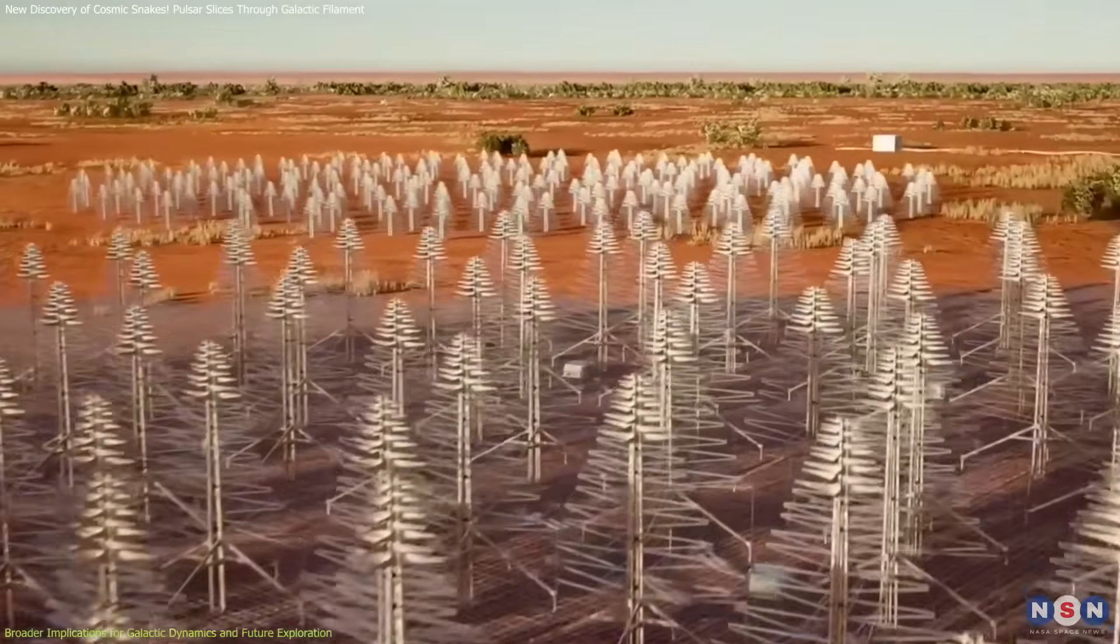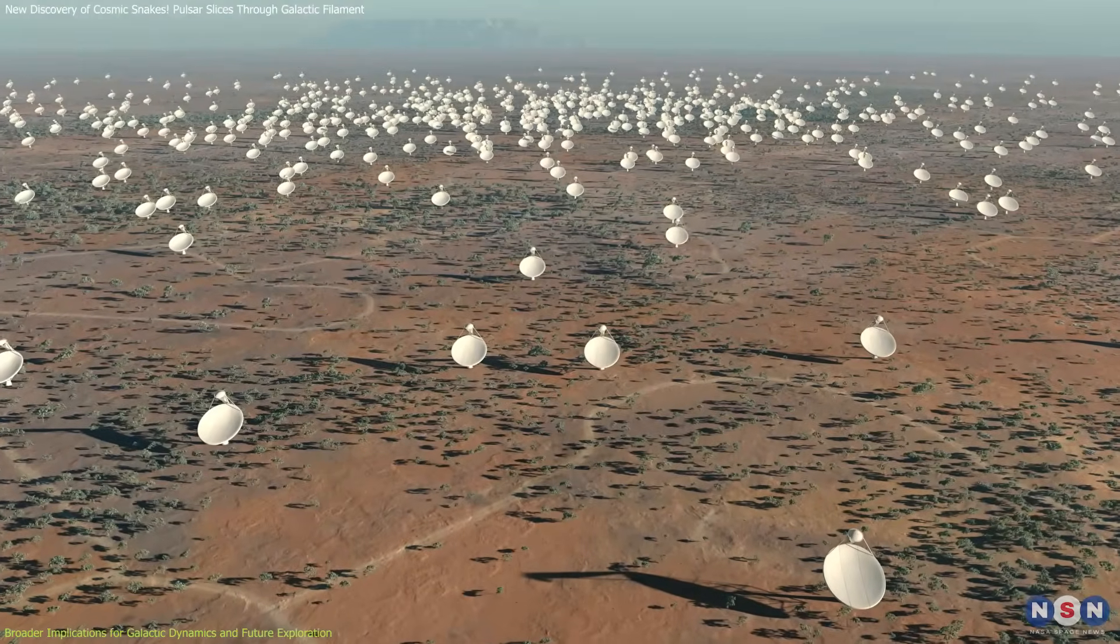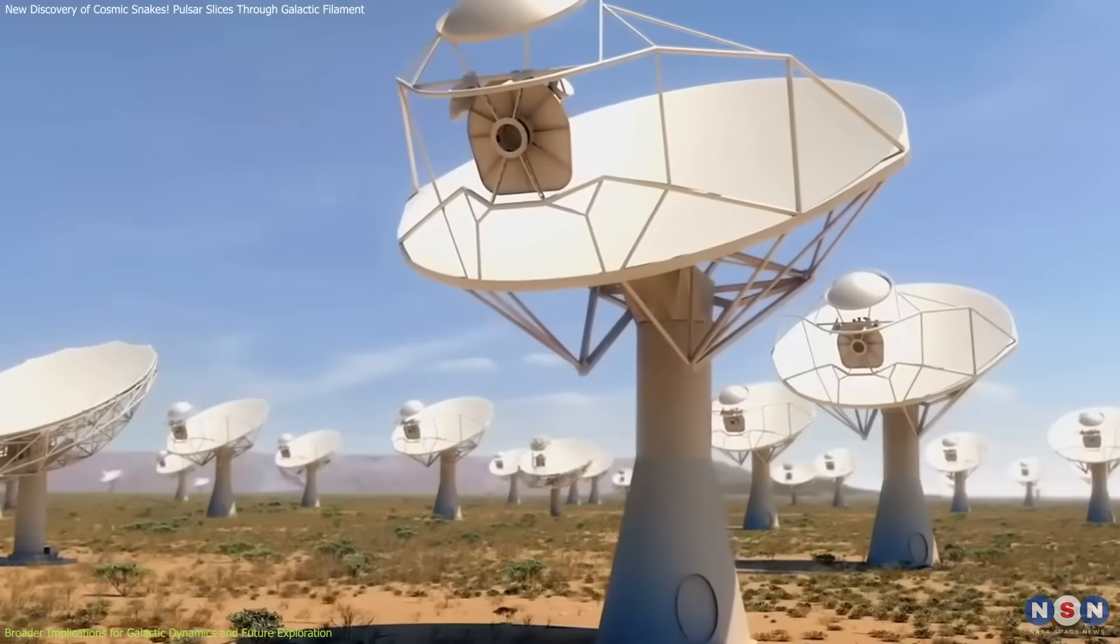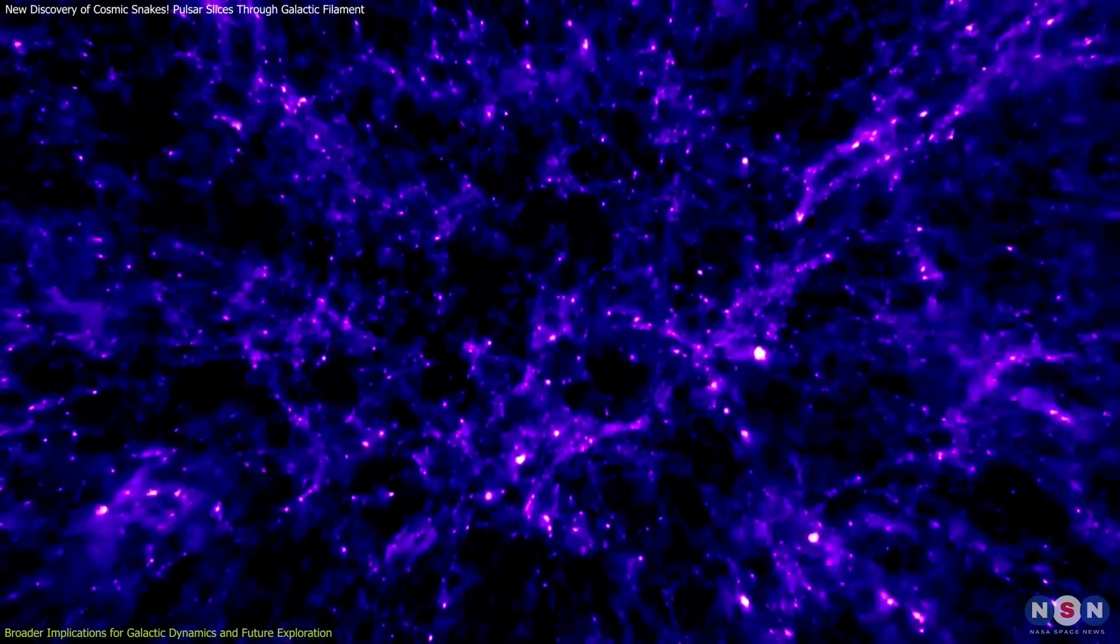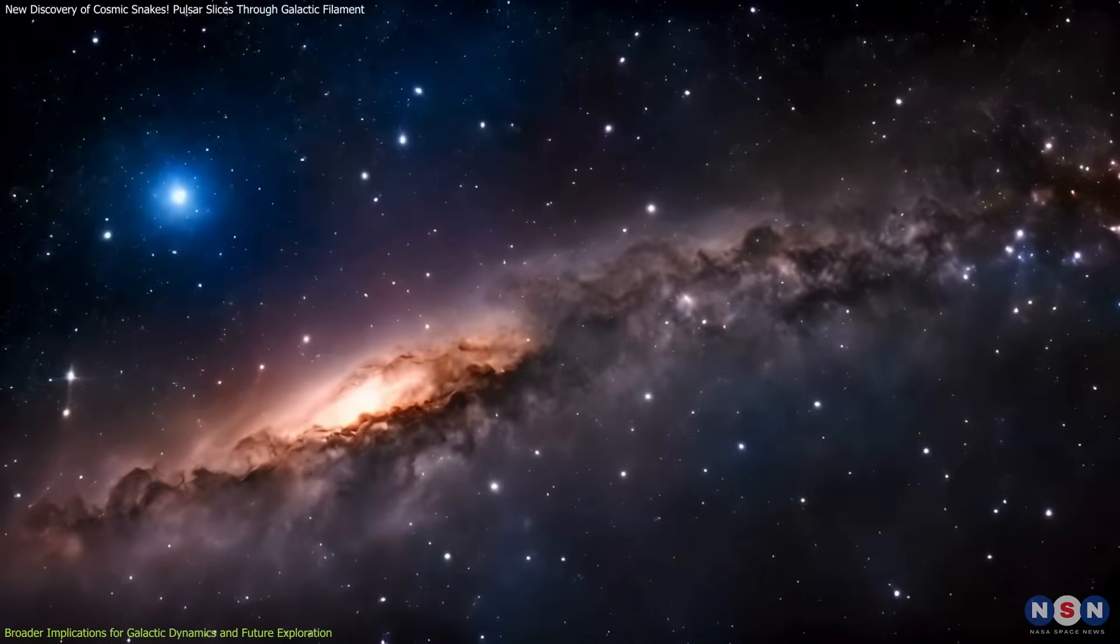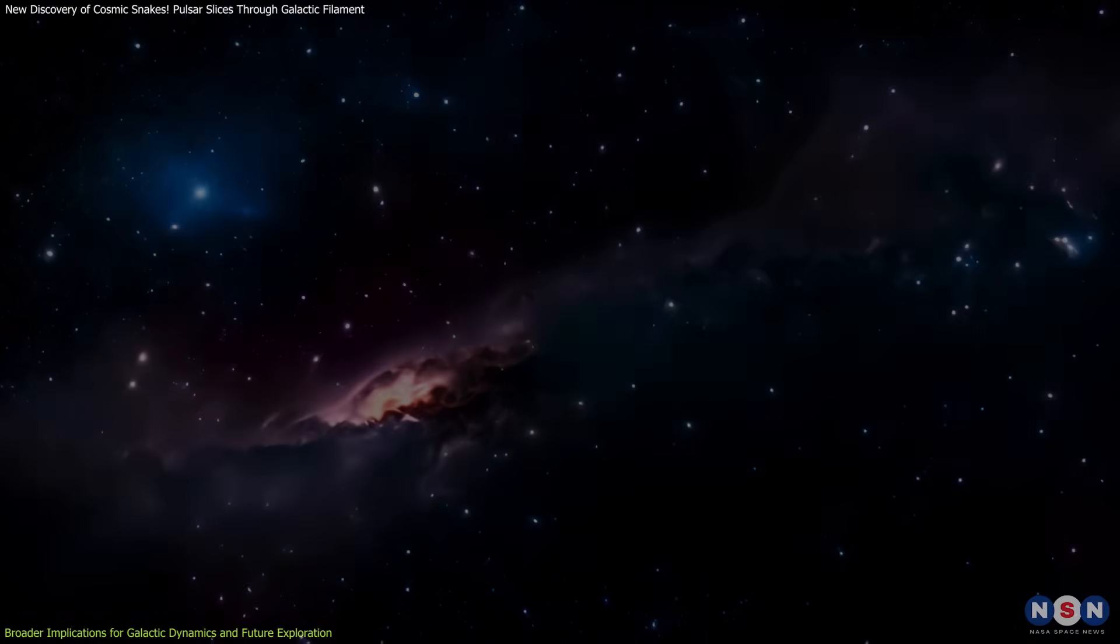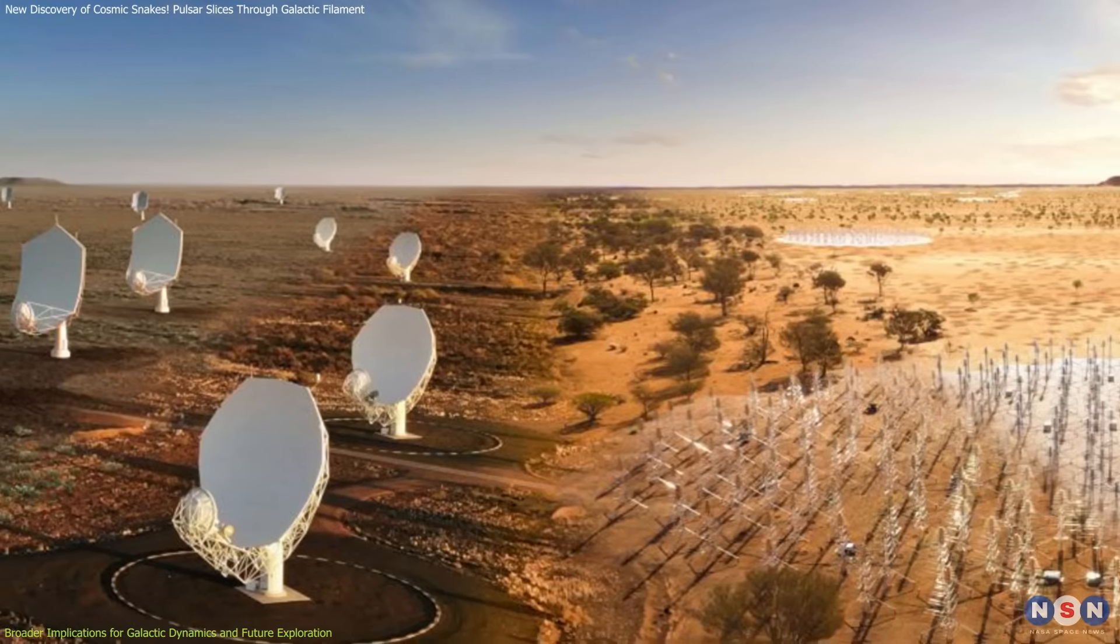Looking forward, the upcoming Square Kilometer Array (SKA) will expand our ability to detect such events across the Milky Way and beyond. With greater sensitivity and spatial resolution, SKA will help scientists find more filament fractures, trace runaway pulsars across their paths, and reveal previously undetected magnetic threads throughout the galaxy. This leap in technology also brings a more comprehensive approach to studying space.